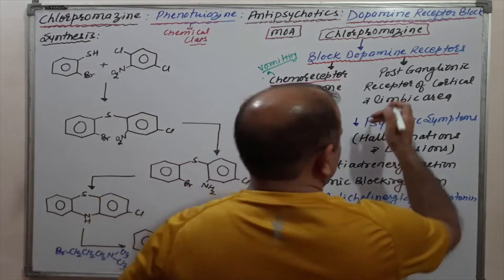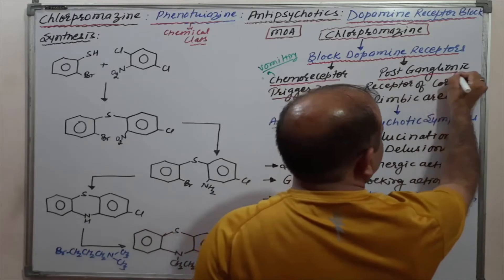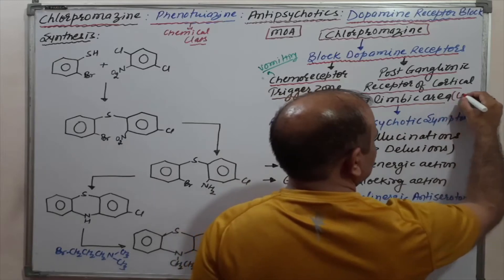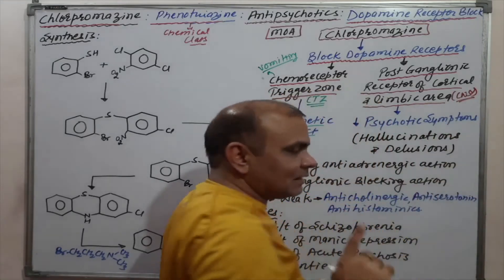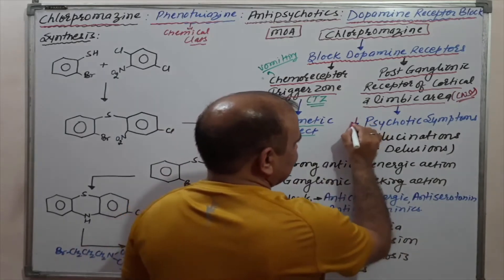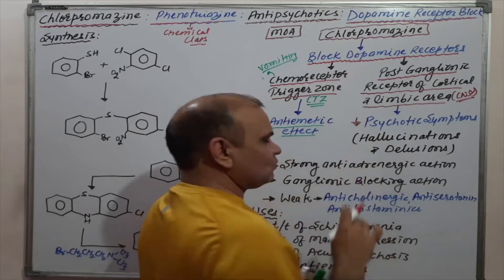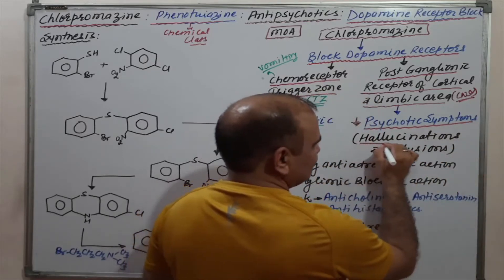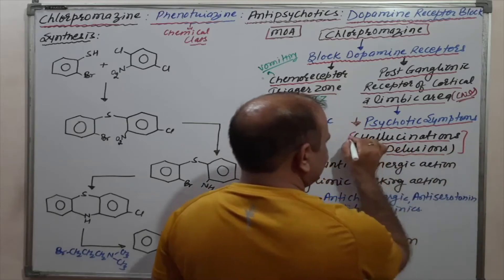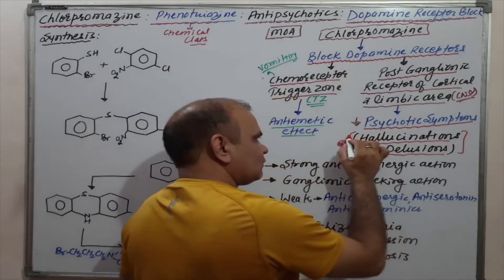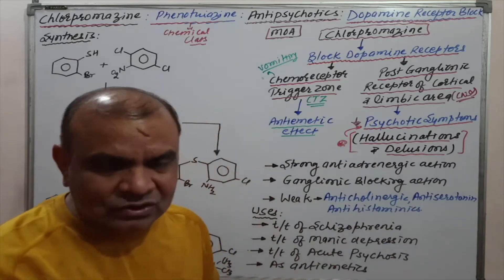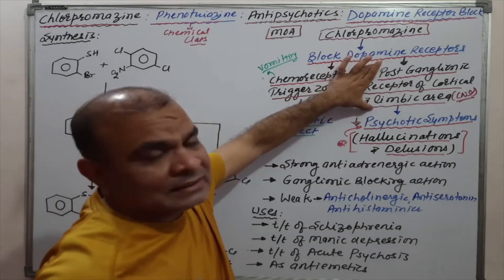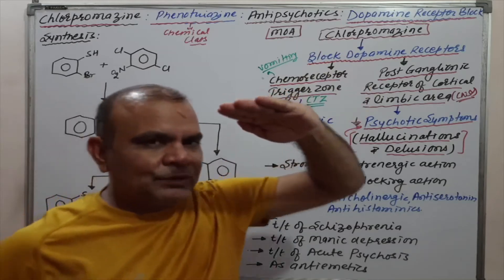At the same time, if these dopamine receptors are present on the post-ganglionic receptors of the cortical and limbic area — that is the CNS part — this results in a decrease or depression of psychotic symptoms, which are hallucinations as well as delusions. These are the two different components of psychosis or psychotic symptoms. Due to dopamine receptor blockage in this area, there is depression of psychotic symptoms.